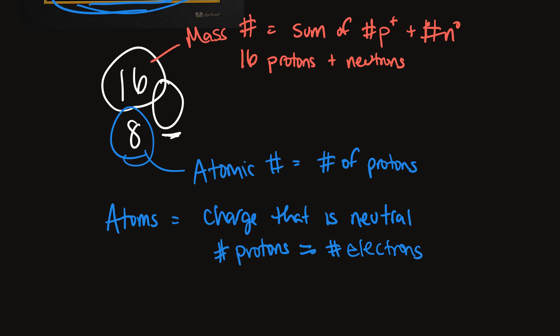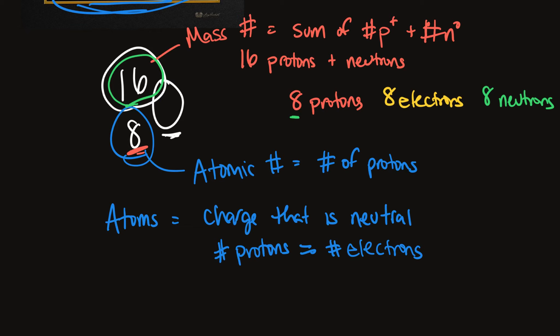So we have 8 protons — we know that because the atomic number is 8. We have 8 electrons because it's a neutral atom. And because the mass number is 16, that means there are 16 protons and neutrons combined. If we know we have 8 protons, then we must also have 8 neutrons, because 8 plus 8 equals 16. That's how you figure that out.